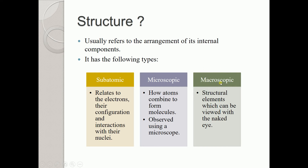If you scale down further, you have a microscopic structure, where we see how atoms combine to form molecules, observed using a microscope. Further scaling down gives you a subatomic structure, which relates to electrons, their configuration, and their interactions with the nucleus. So broadly, structure is classified into three categories: macroscopic, microscopic, and subatomic.